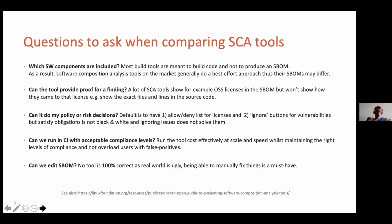The next big thing for us: we have a particular way of thinking about how we do our open source policy and how we make risk decisions. We wanted to automate, automate, automate, and fairly early on we discovered this is really difficult with a lot of existing tools because they mostly offered us allow/deny lists and we wanted to do way more than that. As I interact with several organizations across the world in these open source communities, we figured out our way of thinking is kind of standard — it's just that a lot of tools don't allow this level of automation yet.